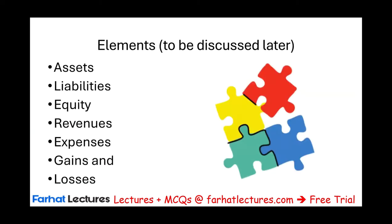The conceptual framework also defines elements — the pieces of the financial statements. I'm going to list them: assets, liabilities, equity, revenues, expenses, gains, and losses. We're going to take a look at each one of them and explain each separately in a later discussion. Those are the elements defined in the conceptual framework.